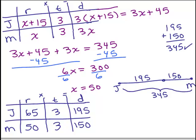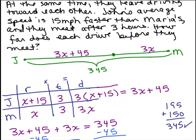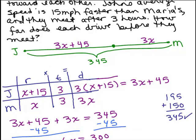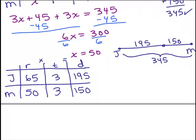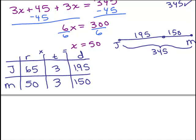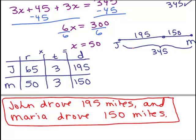So now we have to answer the question. Back up to the question here. How far does each drive before they meet? Okay, that means their distance, right? So now we could look at this chart and we see John's distance was 195 and Maria's was 150 miles, so we say John drove 195 miles and Maria drove 150 miles. And that is our answer. We checked it, it all checked out, it made sense.